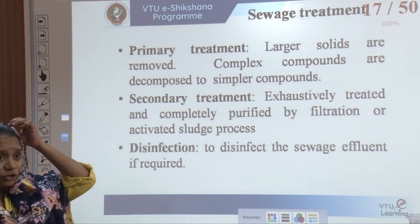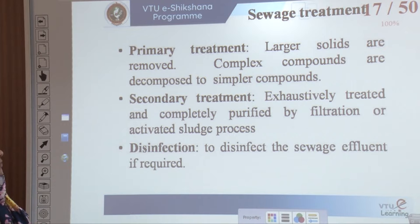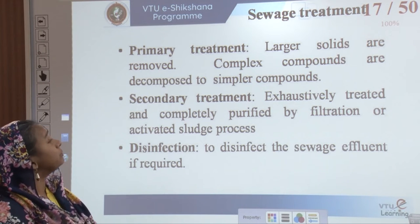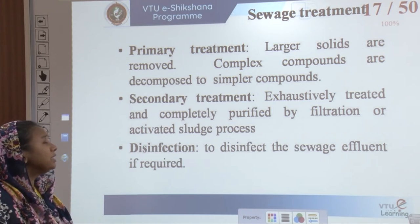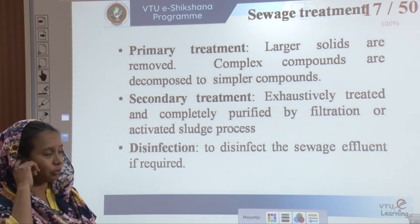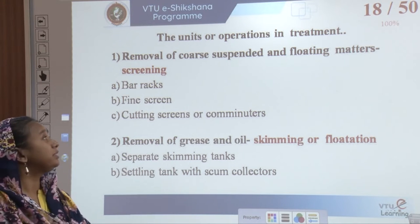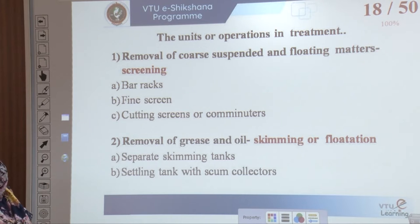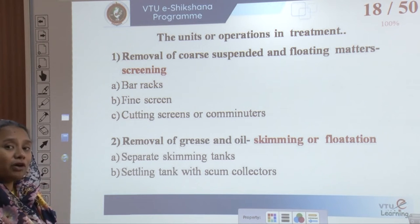Sewage treatment is divided into primary and secondary treatment. In primary treatment the larger solids are removed and complex compounds are decomposed to simpler compounds. In secondary treatment the sewage is exhaustively treated and completely purified by filtration or activated sludge processes. Third is disinfection, where the sewage effluent is disinfected if required. The units of operation for treatment are: first, removal of coarse suspended and floating matters through screening using bar racks, fine screens, cutting screens, or comminutors. Second, removal of grease and oil through flotation or skimming using skimming tanks and settling tanks. Third, removal of finely divided suspended matters through sedimentation and chemical precipitation.